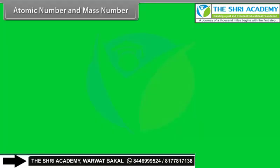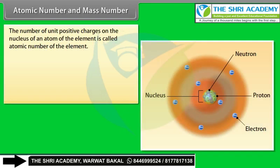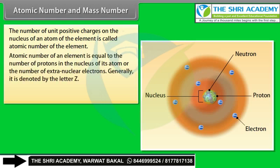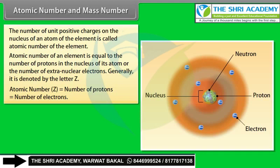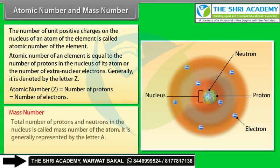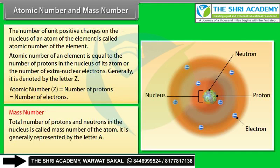Atomic number and mass number: The number of unit positive charges on the nucleus is called the atomic number Z, equal to the number of protons or the number of extra-nuclear electrons. Mass number A is the total number of protons and neutrons in the nucleus. Mass number A = number of protons + number of neutrons = number of nucleons.